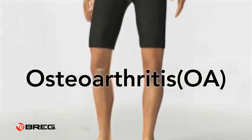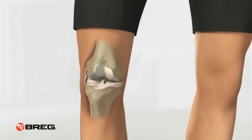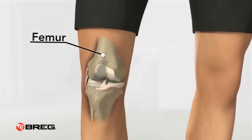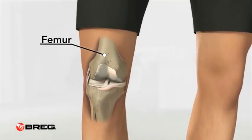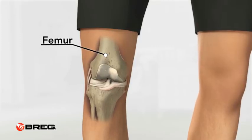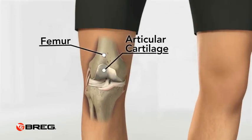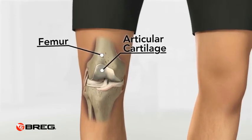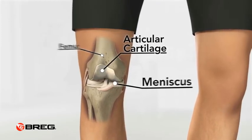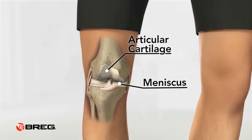Osteoarthritis, or OA, is the most common form of arthritis. This disease causes pain, stiffness, and limited movement of the affected joint.